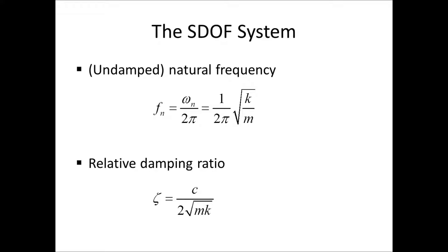So, we start with the SDOF system solutions. As you know, there is one natural frequency, or the undamped natural frequency, which we denote fn in Hertz, or omega n in radians per second. And omega n is given by square root of k over m, and thus the frequency is one over two pi times square root of k over m.